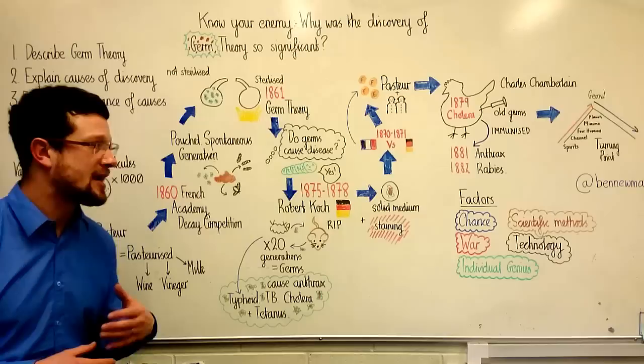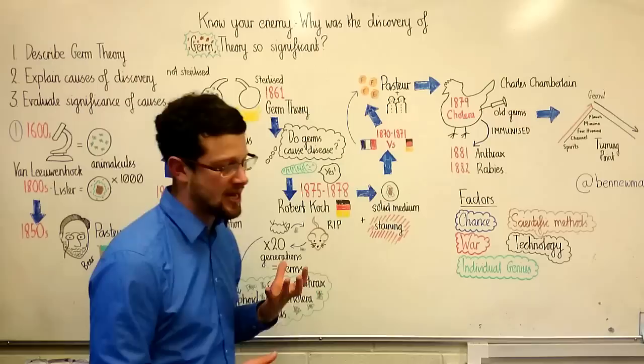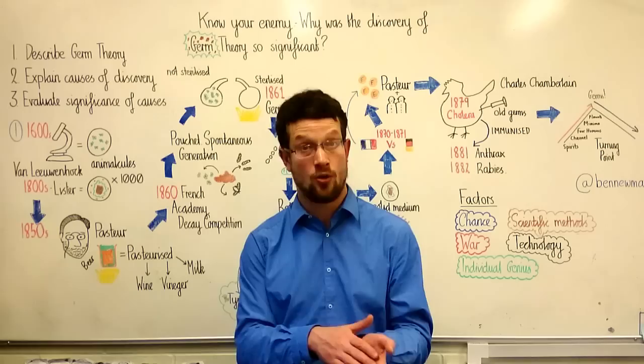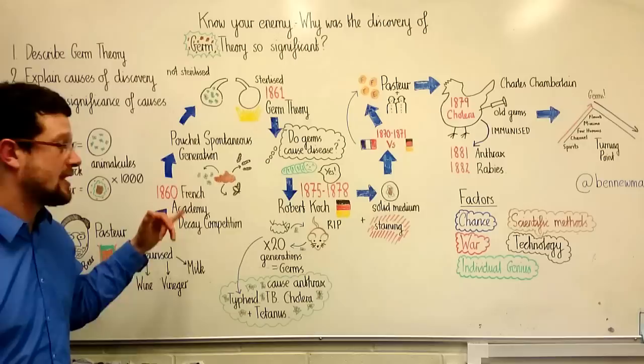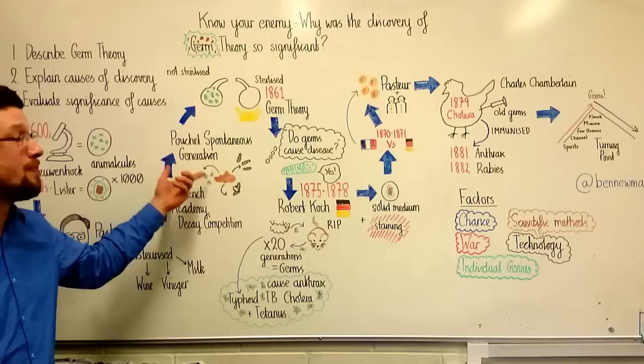In this competition, he was running up against another famous French scientist called Pouchet. Pouchet believed in an older theory called spontaneous generation. In this theory, the rot itself is actually created by the material which is rotting. For example, if you saw a rotting piece of meat with mould on it, or even maggots, this theory would say that that mould or maggots was actually created by that material itself.